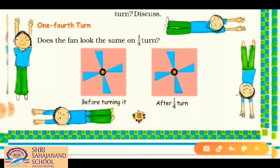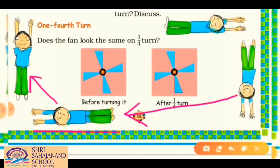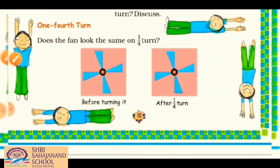If this position goes to another one fourth turn, you will get another sleeping position. And in the next one fourth turn, you come back to your original position — picture one. I hope you have understood one fourth turn through this activity.